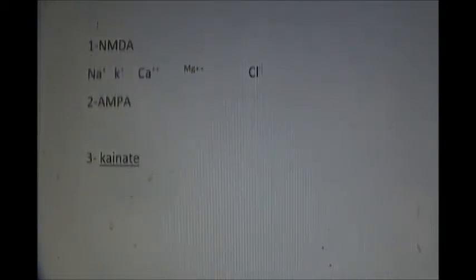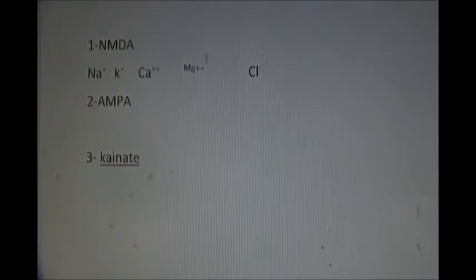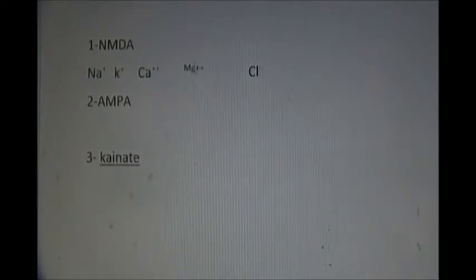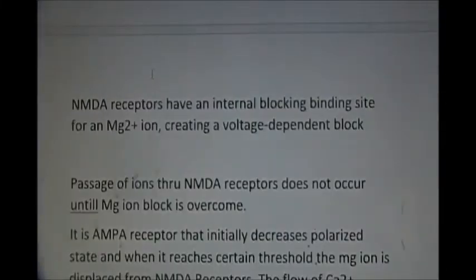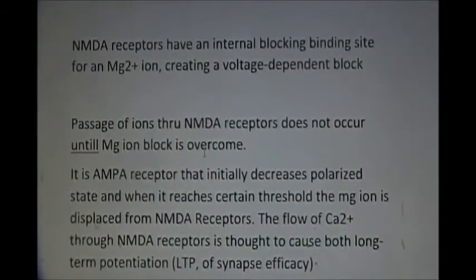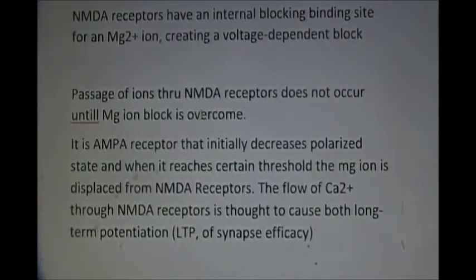The NMDA receptors involve five ions: two monovalent cations, two divalent cations, and one monovalent anion chloride. The monovalent cations are sodium and potassium; the divalent cations are calcium and magnesium; and the monovalent anion is chloride, which acts as an agonist. Magnesium is the natural blocker of the NMDA receptor. The NMDA receptors have an internal blocking site — magnesium blocks it just like a guard sitting on a gate, not allowing anybody inside. The passage of ions through the NMDA receptor does not occur until this magnesium ion block is removed.